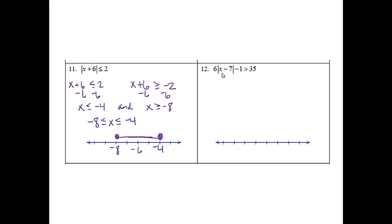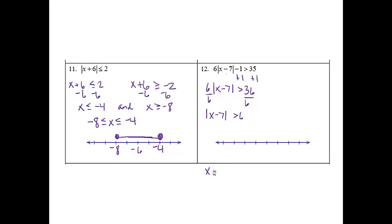Number 12: 6 times the absolute value of x minus 7, minus 1, is greater than 35. We can't write two inequalities yet because the 6 and 1 are in our way. So let's start by adding 1 to get 6 times the absolute value of x minus 7 is greater than 36. Then divide both sides by 6 to get the absolute value of x minus 7 is greater than 6. Now I'm ready for my two inequalities: x minus 7 is greater than 6, and x minus 7 is less than negative 6. Adding 7 to each, I get x is greater than 13 and x is less than 1.